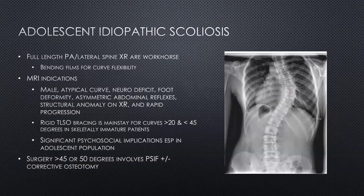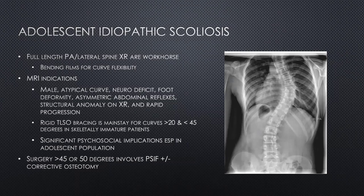Regarding the workup of AIS: we get PA full-length spine films rather than AP, so the right side of the screen is actually the patient's right — you can see the cardiac silhouette is inverted. It's important to consider getting an MRI for atypical curves — any curve outside of the right thoracic left lumbar pattern, patients with neurologic abnormalities, foot deformities, or asymmetric reflexes. Some practitioners get MRIs on all males with AIS.